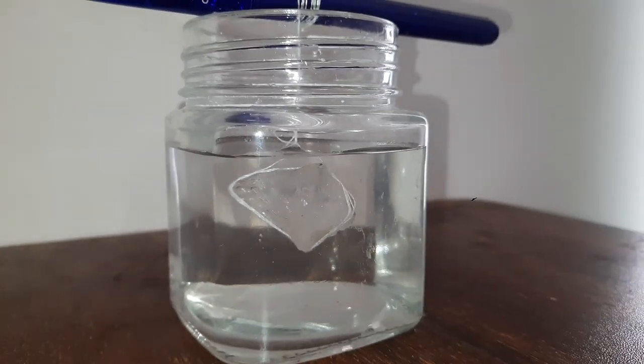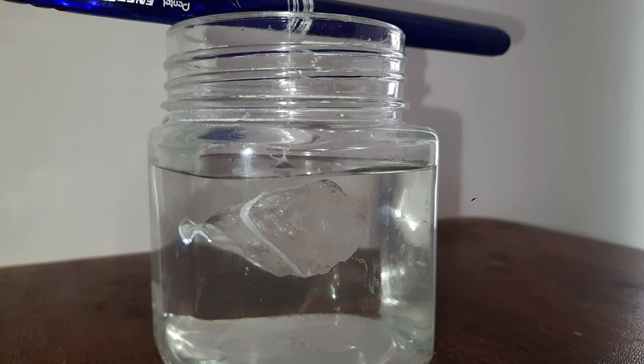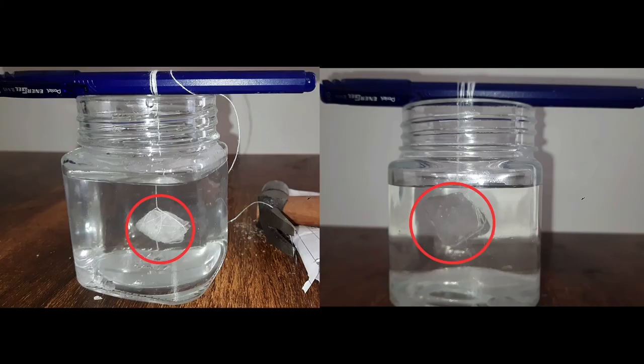So the question now is, is this a physical change or a chemical change? Think about it. Well it turns out this is a physical change. We started from alum crystals and then finally we got back all of those alum in the form of crystals. The crystal that we hung grew bigger, look at the size difference in front of you.